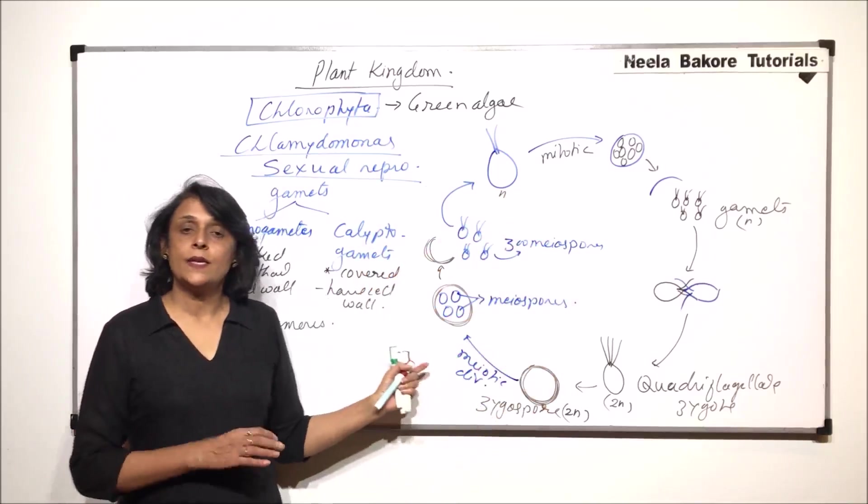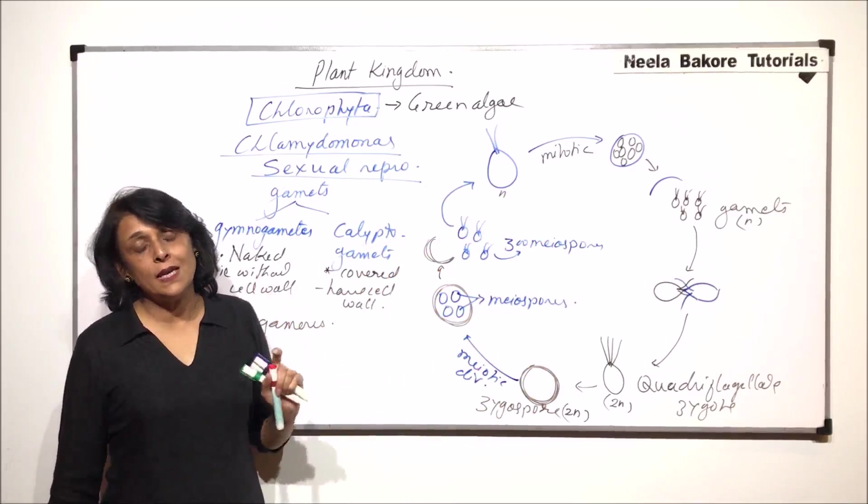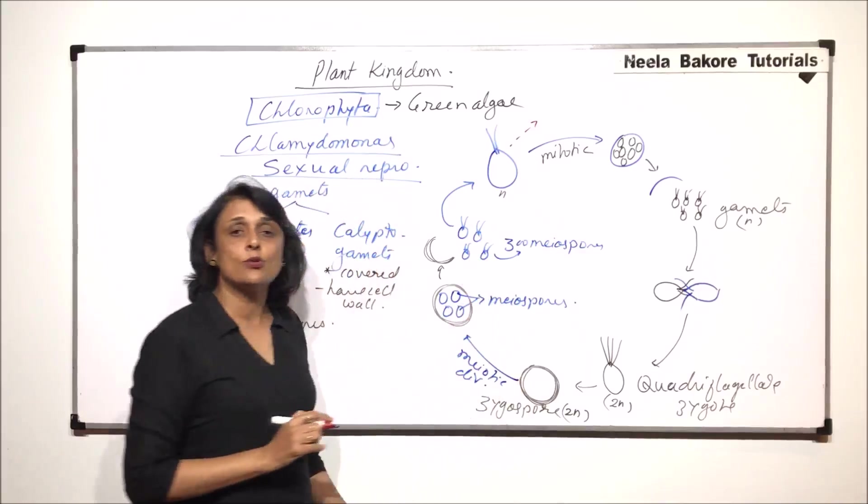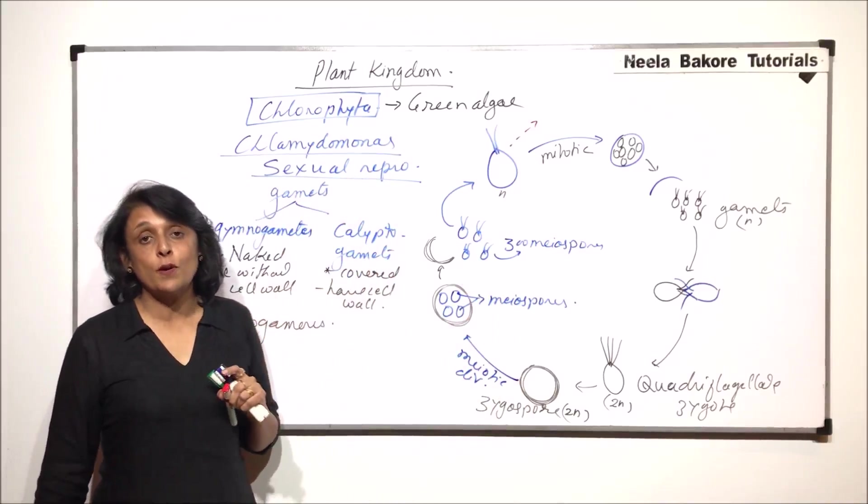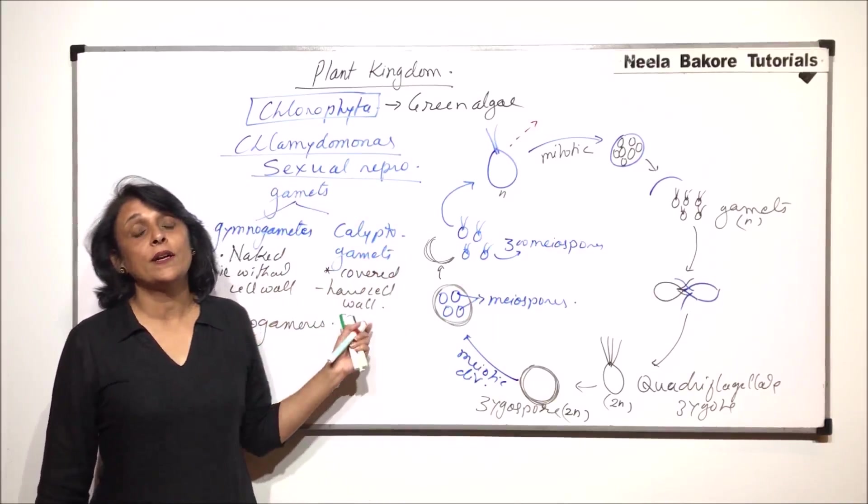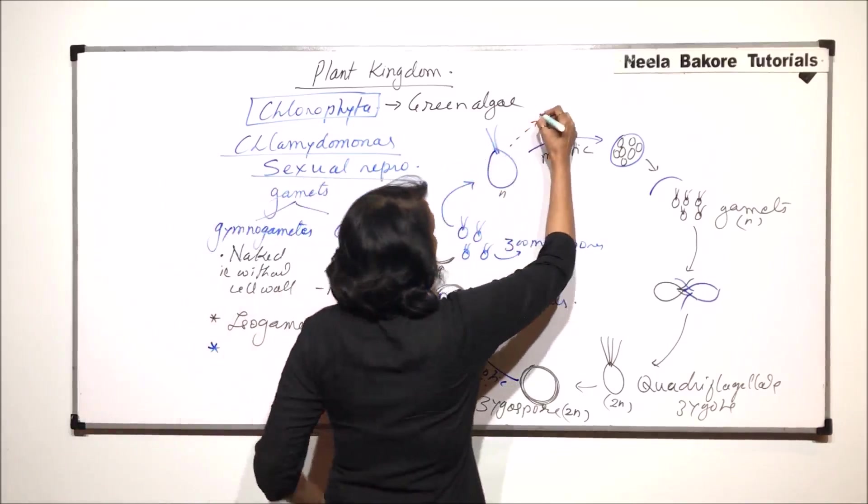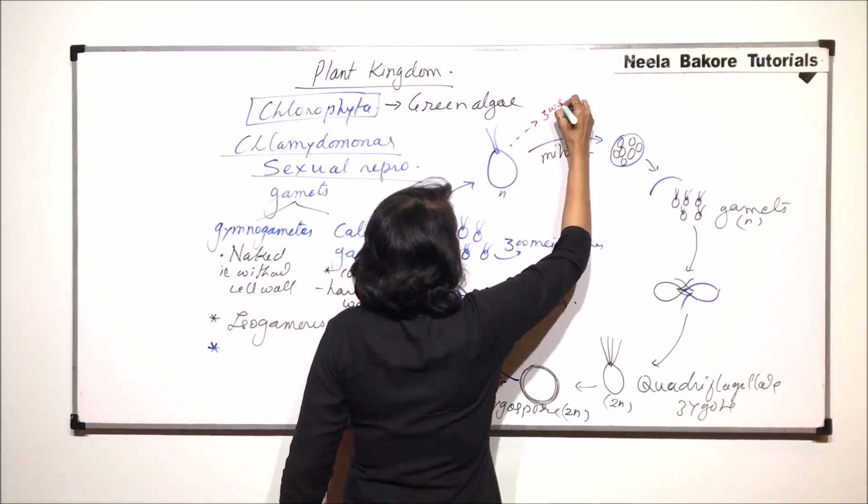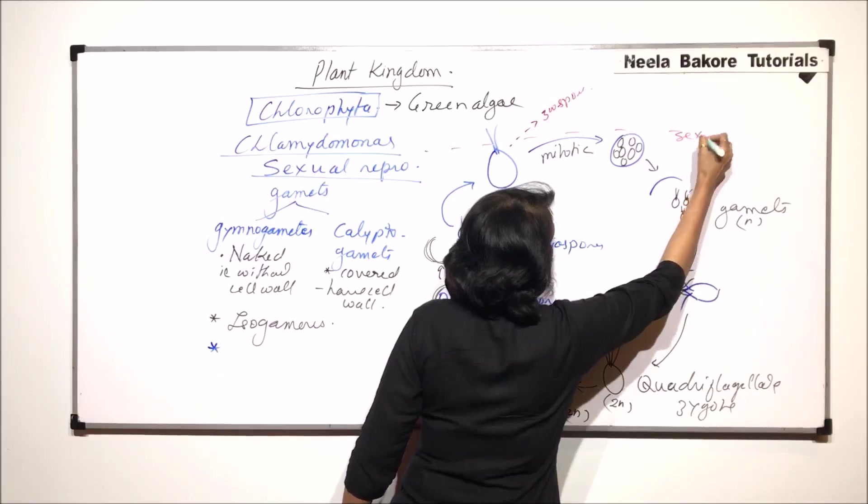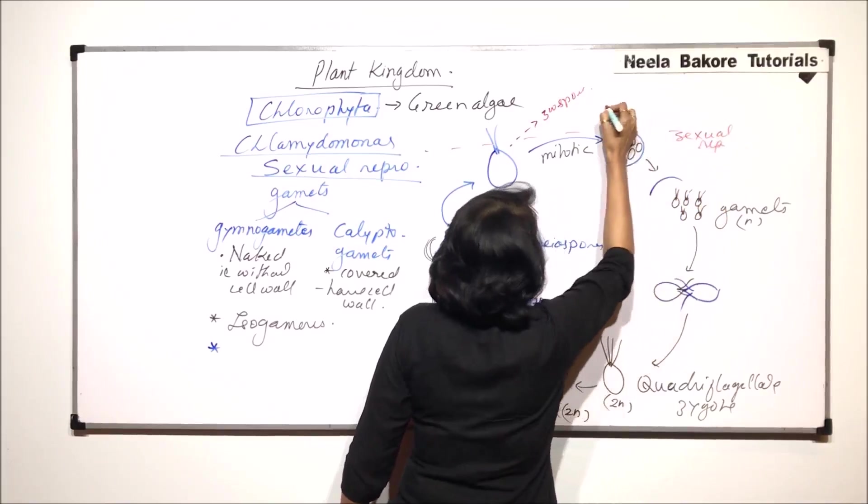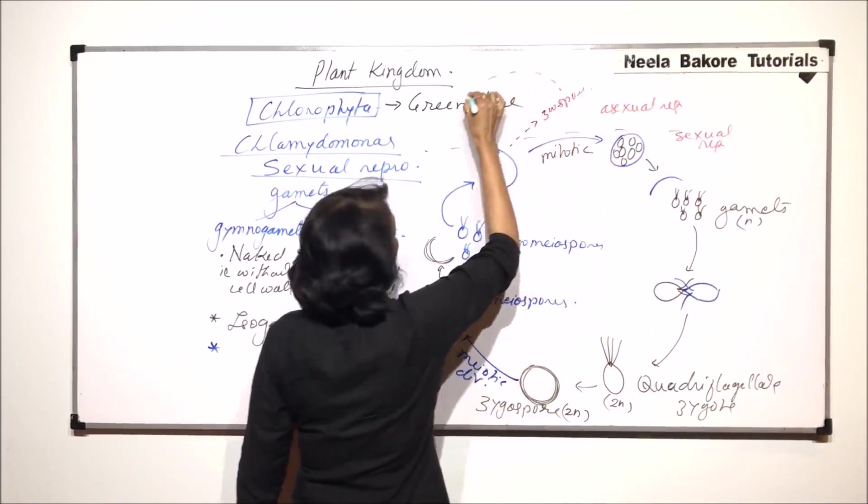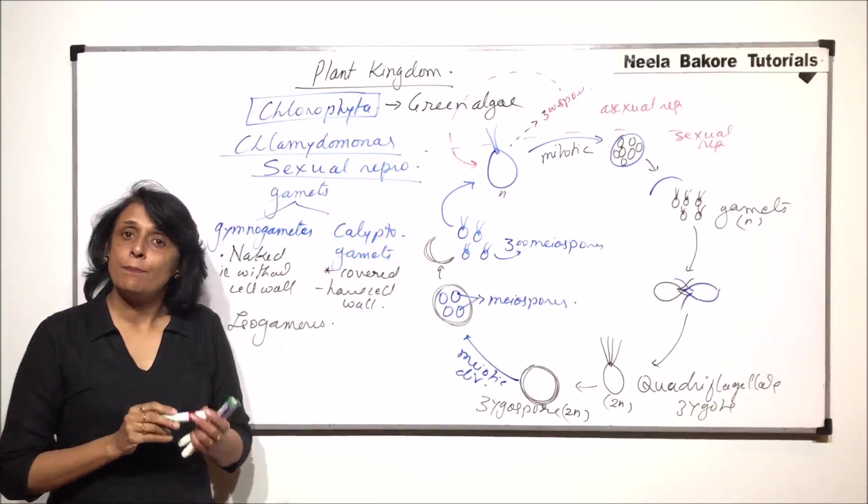Now, this is how the sexual reproduction takes place. We have already seen asexual reproduction. We can start from here and there would be asexual reproduction by either zoospore formation, aplanospore formation, hypnospore, depending upon what kind of conditions are there. If we talk about zoospore formation, this much is the sexual cycle or sexual reproduction and this is asexual reproduction. These zoospores will start again acting as the haploid cells.